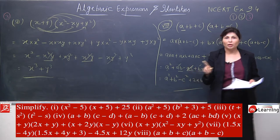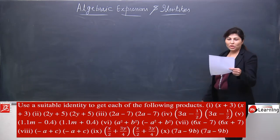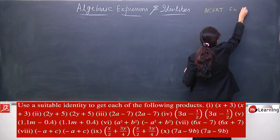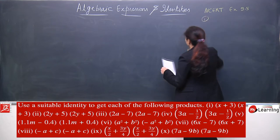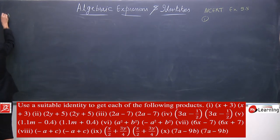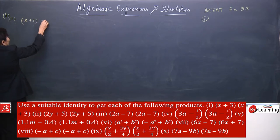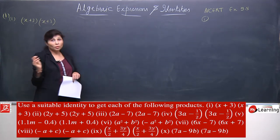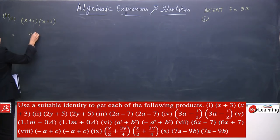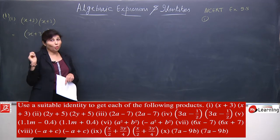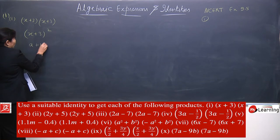Now I am going to take Exercise 9.5, which is the last exercise of your textbook. It is based on identities — since we studied 4 important identities, we need to see their application. First question, first part: (x+3)(x+3). They have said to use the suitable identity to get each of the following products.